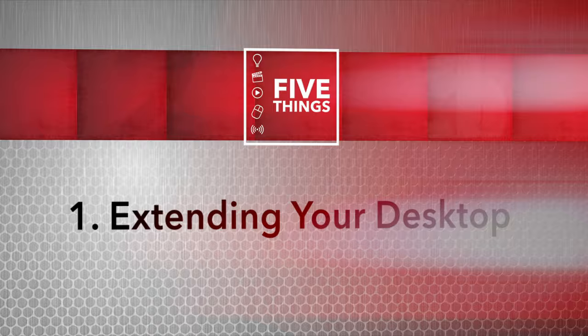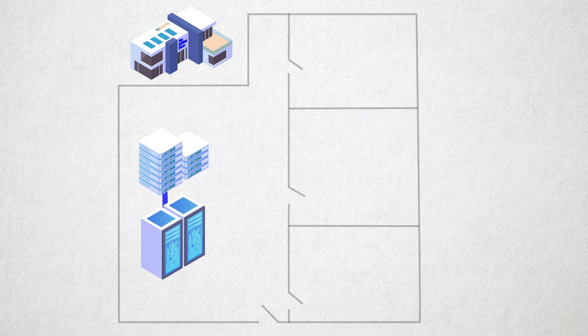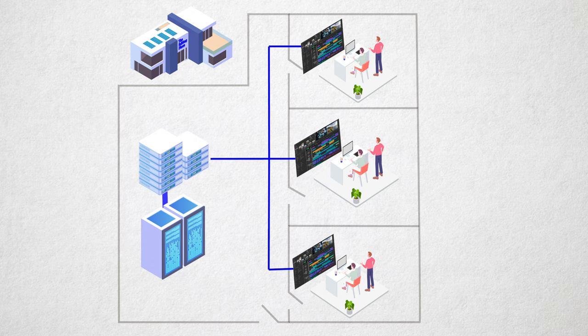The first method we'll look at is simply extending your desktop — having your processing computer at the office while you work from home and remote into that machine. This has been the crutch that most facilities have relied on in the past few weeks. This scenario assumes that you edit at a facility where all of the network computers and all of the shared storage is, and that you can't take any of those things home.